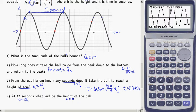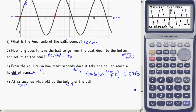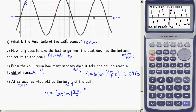So h is what I'm looking for. Like we've done before, we'll show our substitution. h is equal to 6 sin 2π over 7. This time I know that t is 12, so I'm going to plug that in.